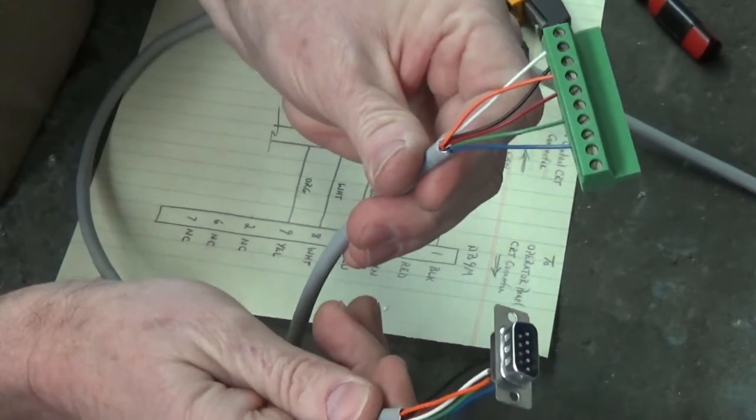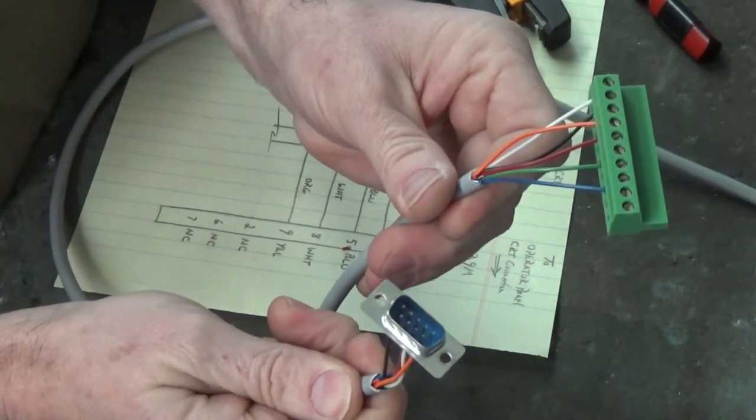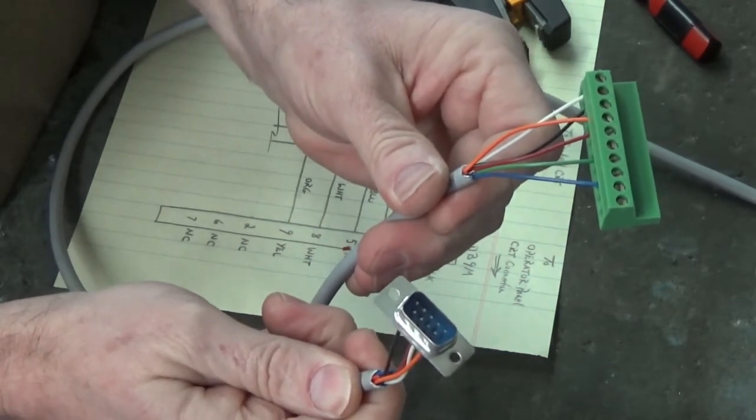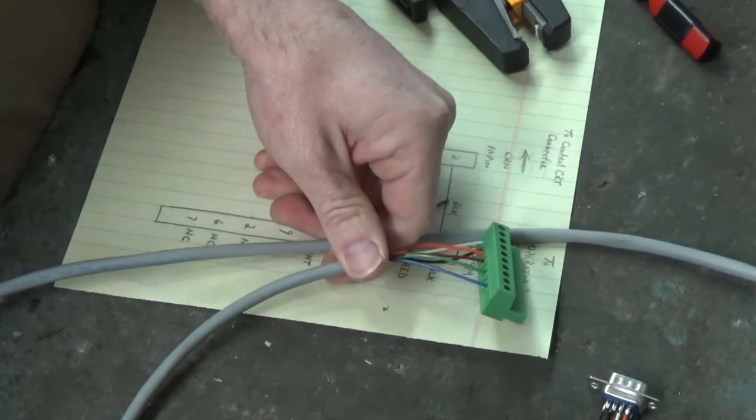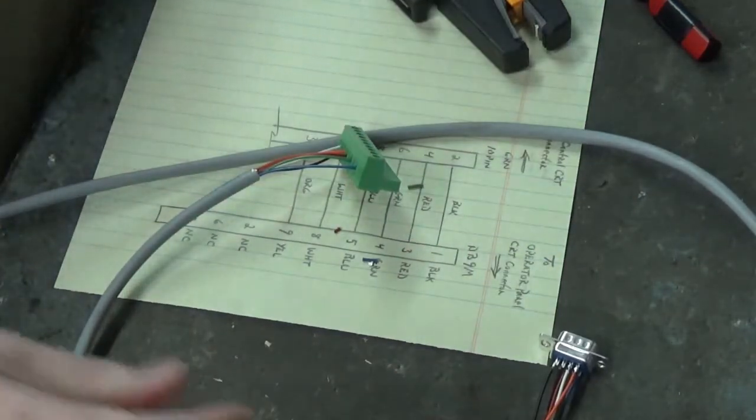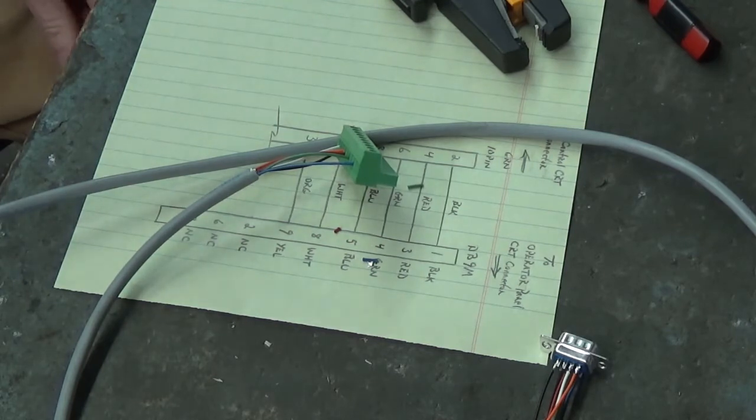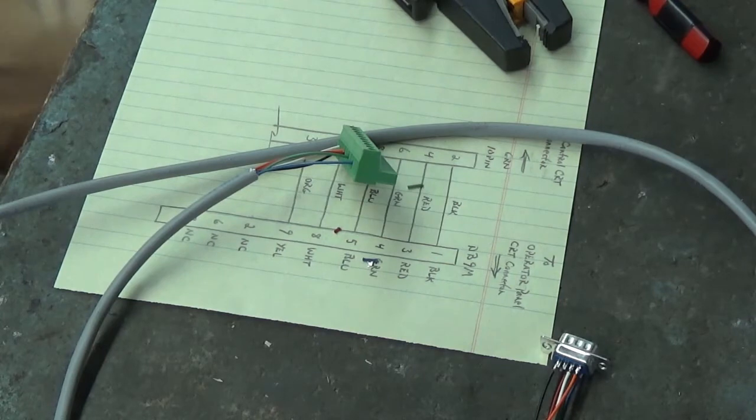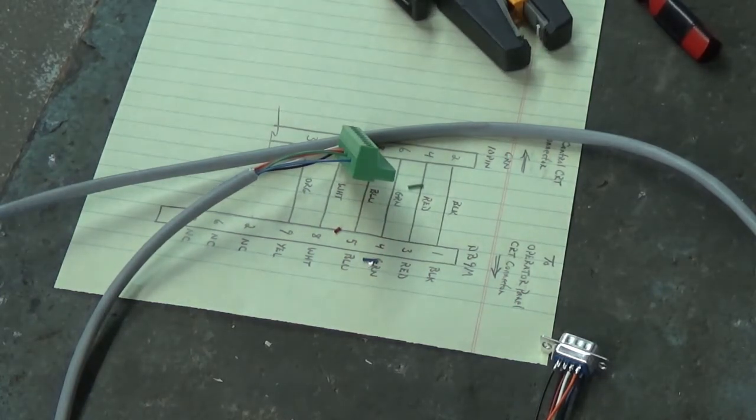This green connector is going to mate to the Allen-Bradley control and the DB9 connector is going to mate to the back of the operator panel. We're done, tomorrow we'll hook it up and try it. I gotta go home and watch the grandkids while my daughter goes to work. Today's Sunday, it's an easy day, you don't gotta work too hard on Sunday. We'll throw both feet at it tomorrow on a Monday. We'll see you in the morning.